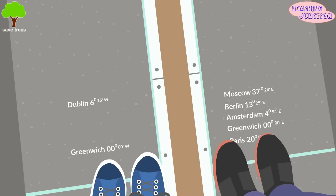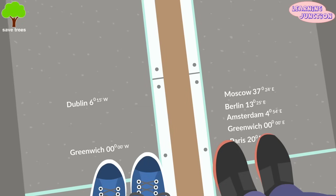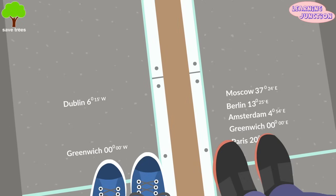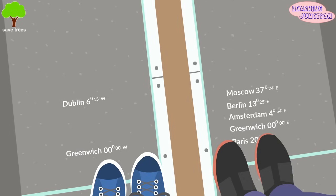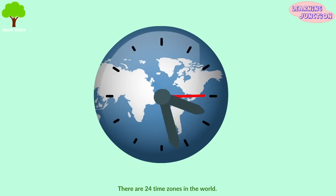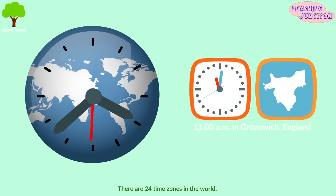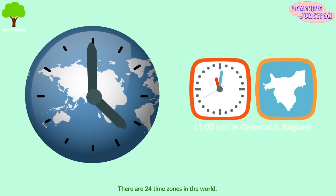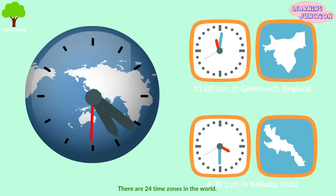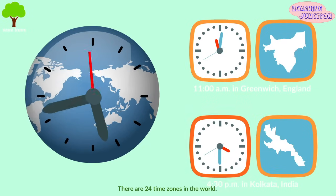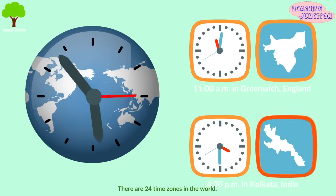It is also the source to calculate time and the international dateline. Each degree refers to four minutes. There are 24 time zones in the world. If an event happens at 11 a.m. in Greenwich, England, it would be reported at 4:30 p.m. in Kolkata, India.